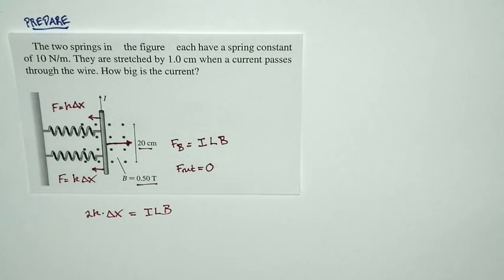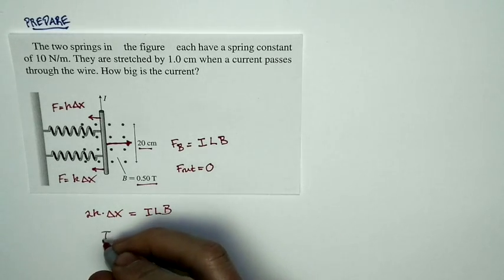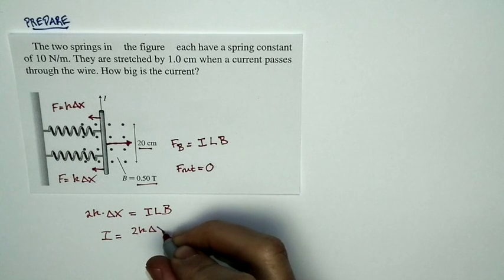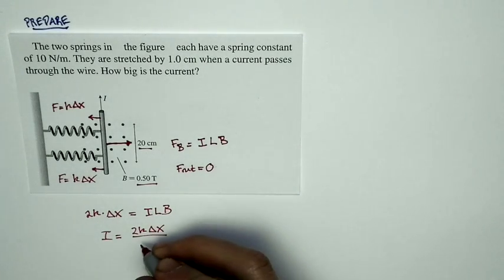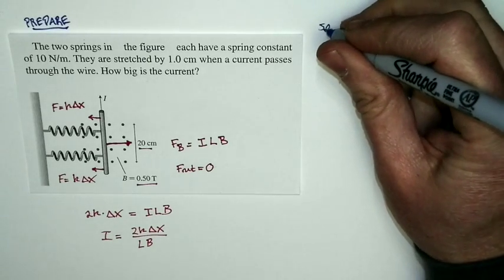And I want to look for the current. And so I can just rewrite this expression this way. The current is equal to 2 times k times delta x, divided by the length of the wire times the magnitude of the magnetic field. And now, with that in hand, we're ready to solve.